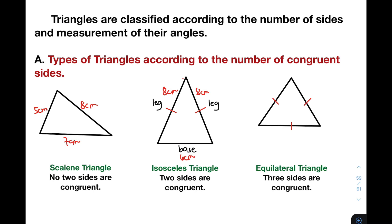Let's move on with the third example. We have equilateral triangle — three sides are congruent. Or in other words, lahat ng sides ay pare-pares ng sukat. As you can see, meron siyang markings 1, 2, and 3. Lahat ng sides natin ay mayroong markings, ibig sabihin lahat ng sides ay equal. So, can you please give us a set of measurements that can represent or form an equilateral triangle? Basically, let's have 5 centimeters, 5 centimeters, and 5 centimeters. All of them are equal. Therefore, this one is an equilateral triangle with three congruent sides.